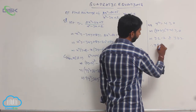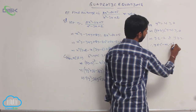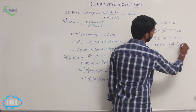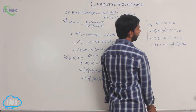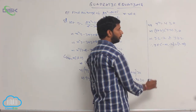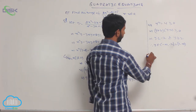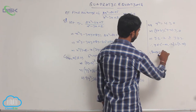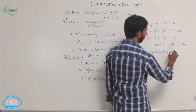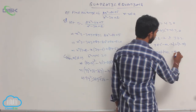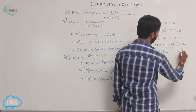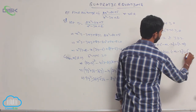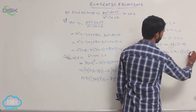Therefore, y belongs to (−∞, −2] ∪ [2, +∞). The range of f(x) is equal to (−∞, −2] ∪ [2, +∞).